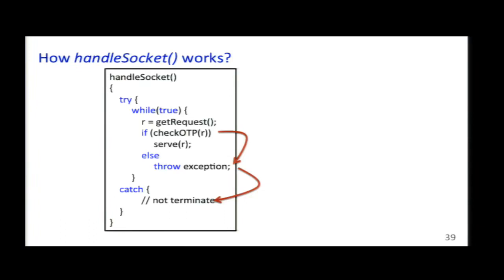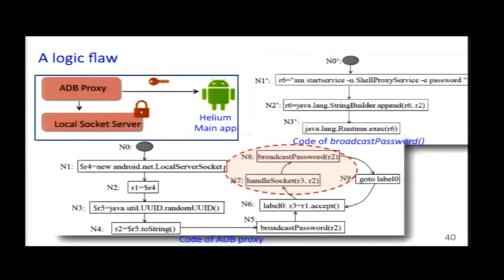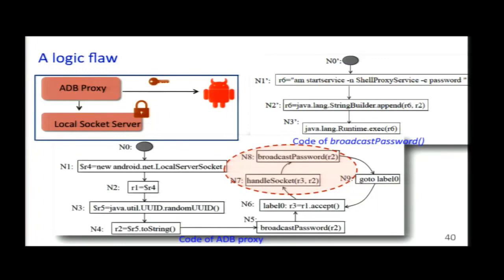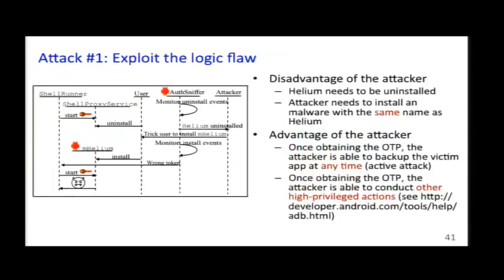If the one-time password is wrong, it generates an exception and execution exits that function, then it enters broadcast_password again. Here is the logic flaw: think about what happens if the Helium app is uninstalled by the user, and the attacker installs an app with the same name as Helium. The proxy will enter broadcast_password again and execute the command again — so the one-time password is sent to the malicious app.